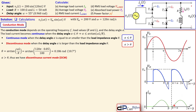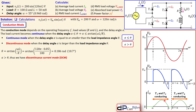In summary: T1 and T2 conduct between α and β, and T3 and T4 conduct between π + α and 2π + β. In DCM operation, the load current returns to zero between β and π + α, confirming DCM. In CCM, the inductor current never reaches zero and always stays above the zero line.